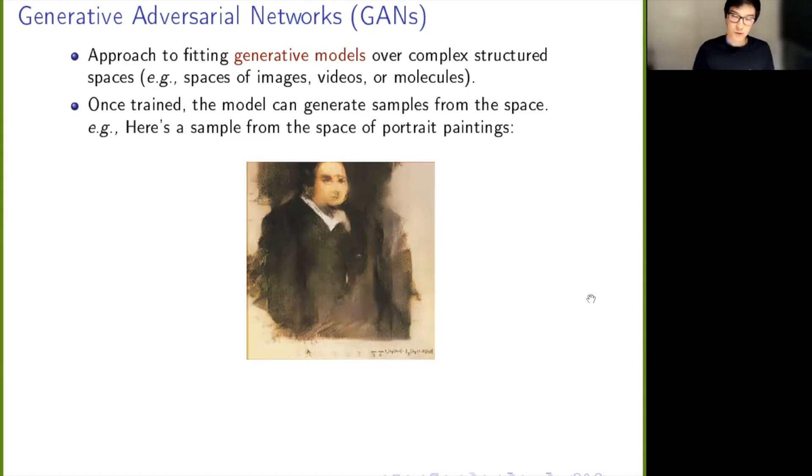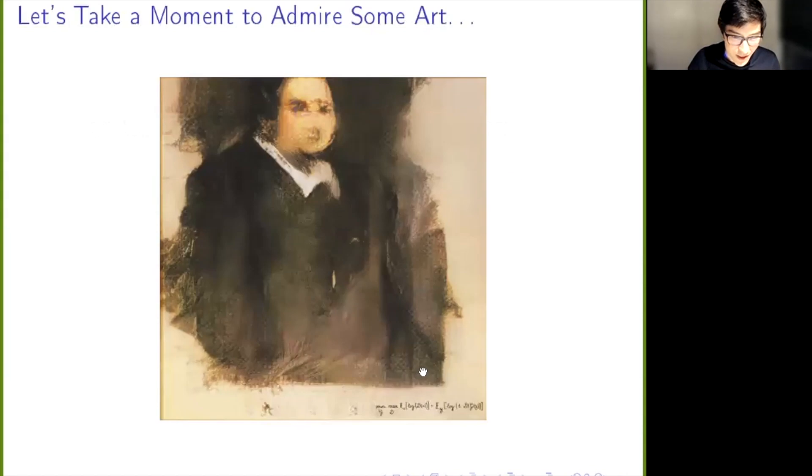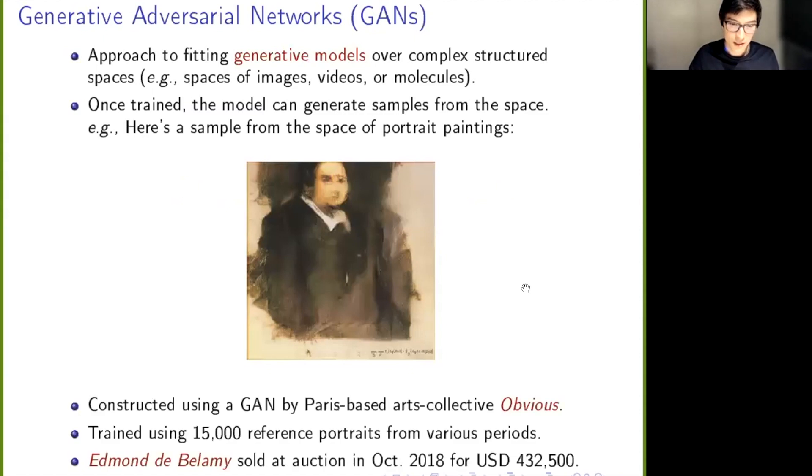We'll mainly focus on images today. Once you've trained one of them, what you can do is generate samples from that space. If you trained a GAN to generate portrait paintings, then you could take one sample of it and it might look a little bit like this picture here, which is the same one we saw on the previous slide. Notice also in the bottom right there's some sort of equation that's relevant, and we'll talk about that a little bit later. This particular artwork was constructed using one of these GANs. It's made by a Paris-based arts collective called Obvious. What they did was train it on 15,000 reference portraits from various time periods. It's called Edmond de Bellamy, and it actually sold in 2018 for about half a million US dollars. This was completely generated by a computer.